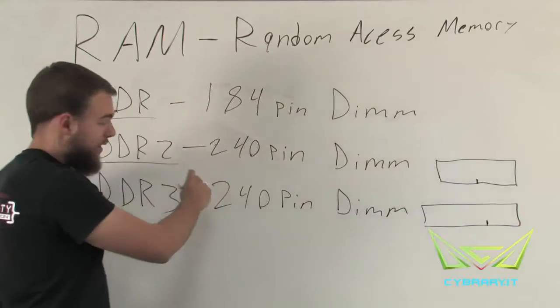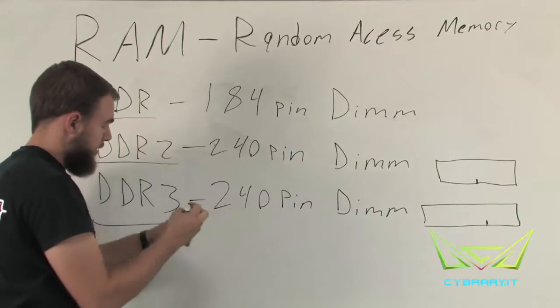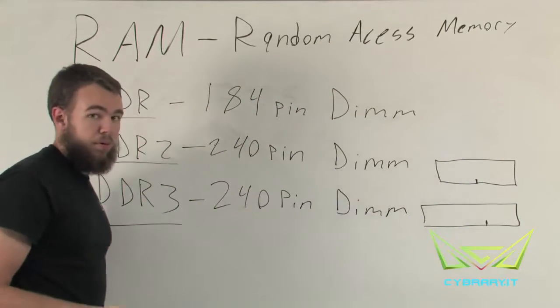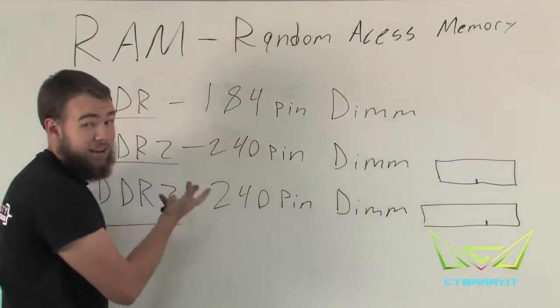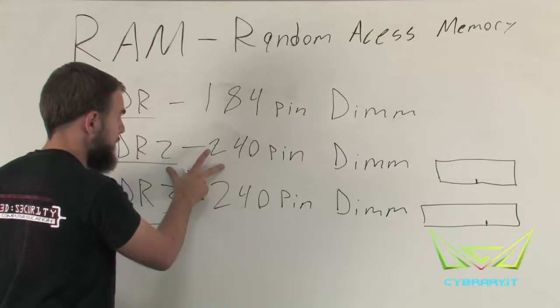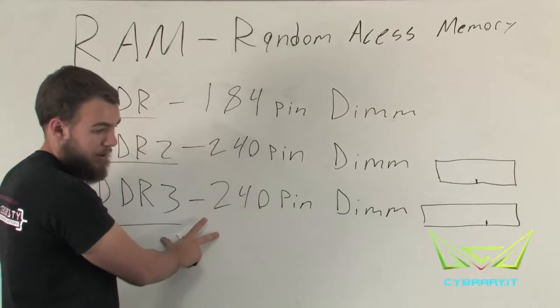So, while they're both the same size, and they both have the same number of pins, the notch is offset differently, so you can't accidentally take a DDR2 memory module and place it in a DDR3 slot.